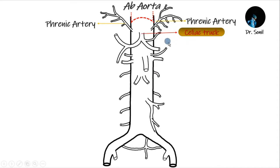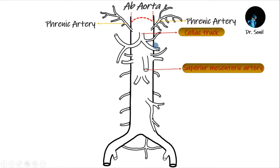Celiac or celiac trunk, starting from the 12th thoracic vertebra, at its large anterior branch. Superior mesenteric artery, starting from L1, at its large anterior branch, arrives just below the celiac trunk.